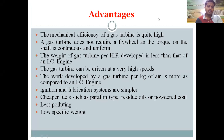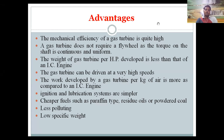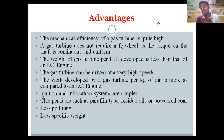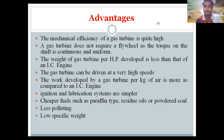The first advantage of a gas turbine power plant is that its mechanical efficiency is 95 percent, which is quite high compared to an IC engine whose mechanical efficiency is only 85 percent. The reason behind this is that the IC engine has a large quantity of sliding parts, which reduces its mechanical efficiency compared to the gas turbine power plant.